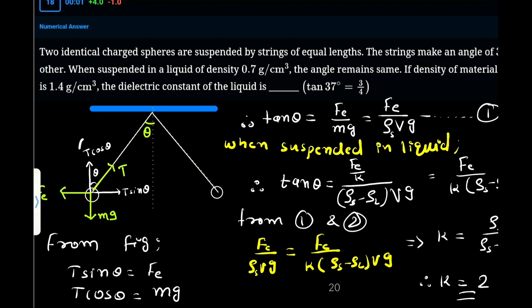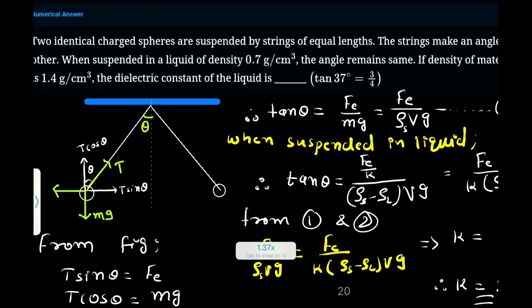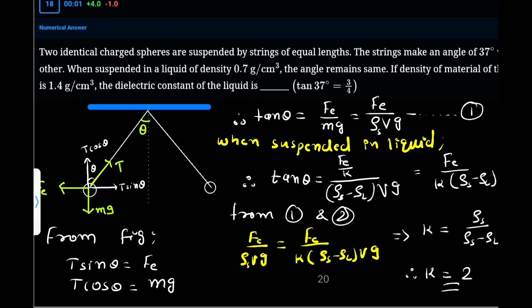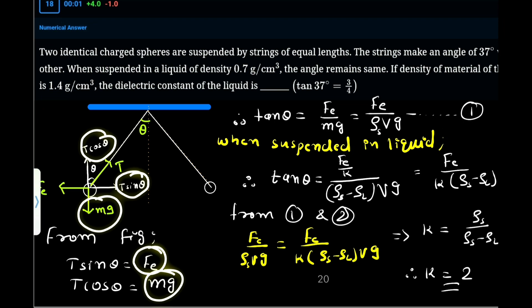Since it is in equilibrium, T cos theta balances mg and T sine theta balances Fe. From the figure we can say T sine theta equals Fe and T cos theta is balanced by mg.